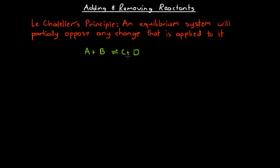For example, we might add a product to this reaction. We have an equilibrium system involving substances A, B, C, and D, all at equilibrium with no net reaction occurring. Now, if we add extra C, then we apply Le Chatelier's Principle. The principle states that our chemical equilibrium will oppose the change — it will oppose the fact that we've added extra substance C. The way it opposes that is by getting rid of some of that extra C that we added.